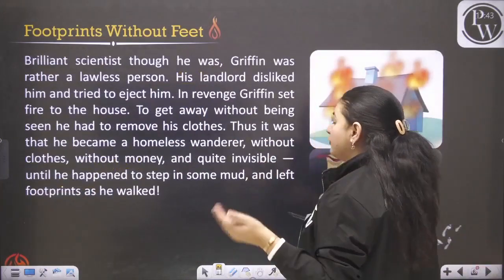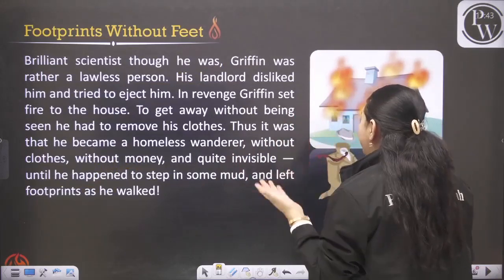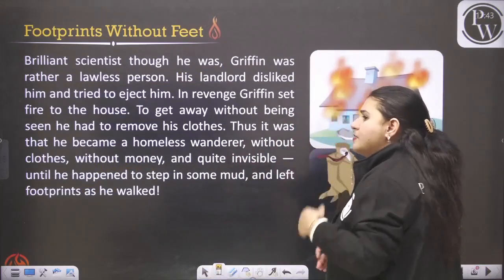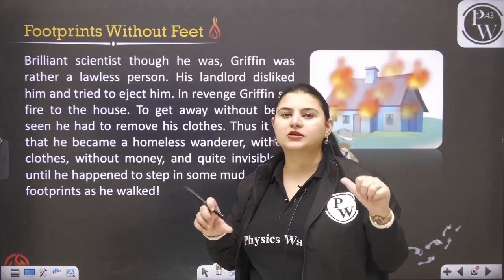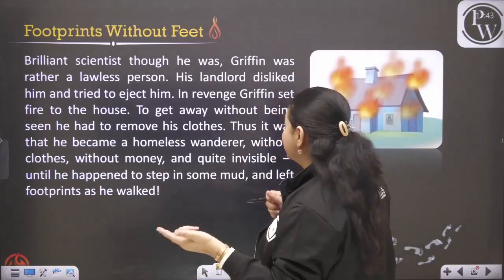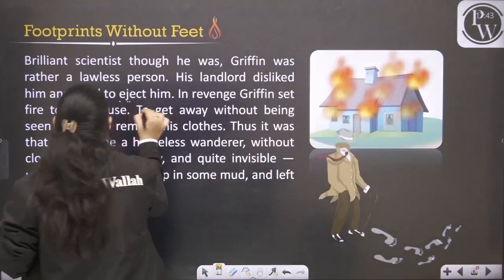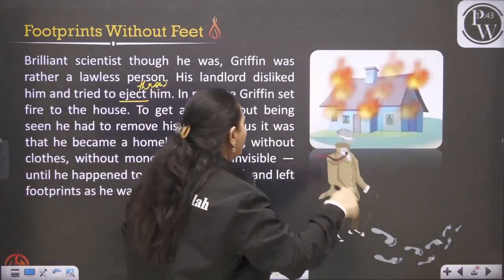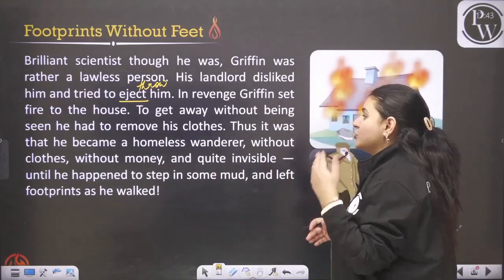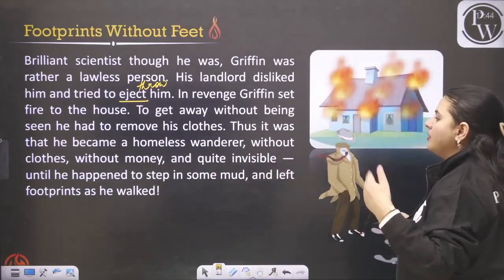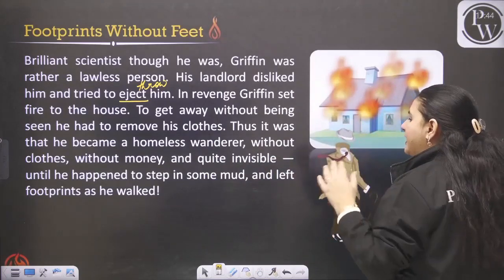Brilliant scientist though he was, Griffin was rather a lawless person - a person who doesn't follow rules. His landlord disliked him and tried to eject him, meaning throw him out. In revenge, Griffin set fire to the house. To get away without being seen, he had to remove his clothes. Thus it was that he became a homeless wanderer, without clothes, without money and quite invisible, until he happened to step in some mud and left footprints as he walked.